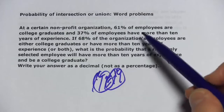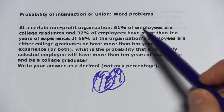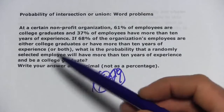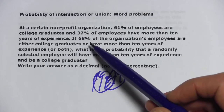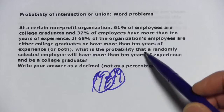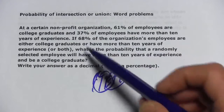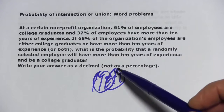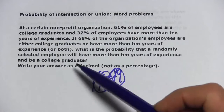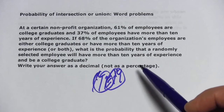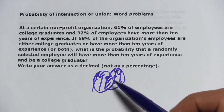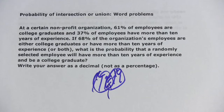This problem says at a certain non-profit, 61% are college graduates, 37% have more than 10 years of experience, and 68% are college graduates, have 10 years of experience, or both — that's the union. We want to find the probability that a randomly selected employee will have more than 10 years of experience and be a college graduate, so we're looking for the intersection.